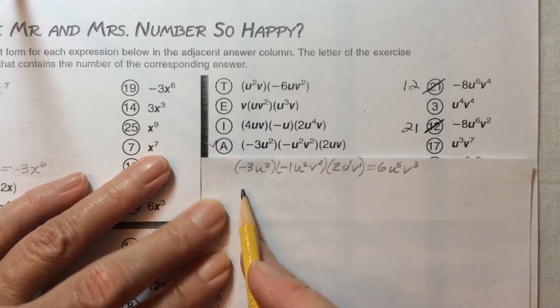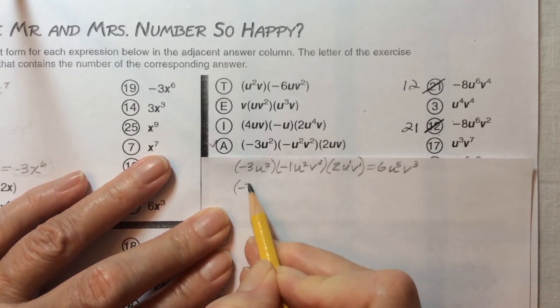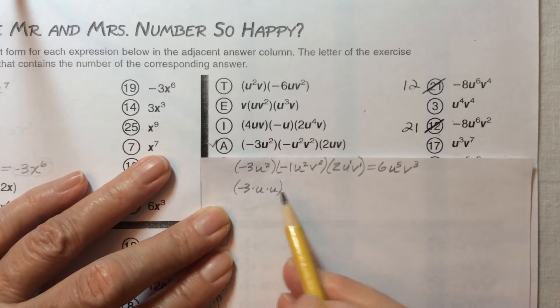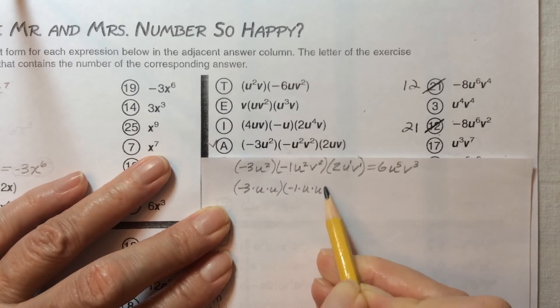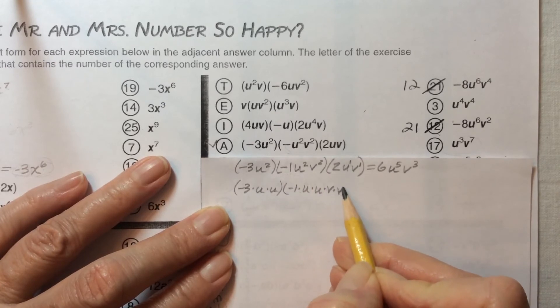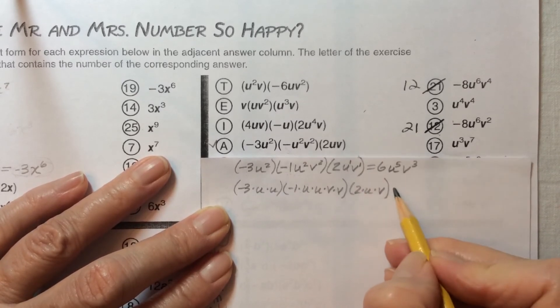Let's try factoring this and see if we get the same thing. Negative 3 times u times u is u to the second power. Then negative 1 times u times u is u to the second power. Times v to the second power, which is v times v. And then we've got 2 times u times v.